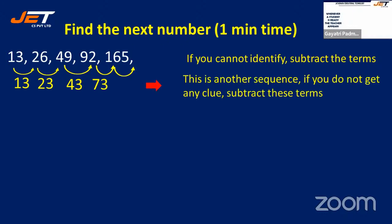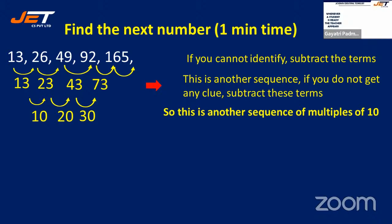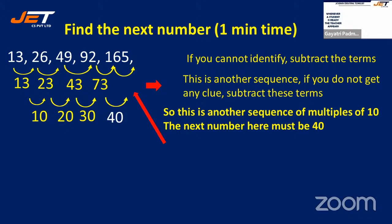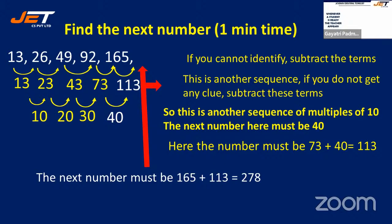If you do not get any clue, subtract these terms again: 23−13=10, 43−23=20, 73−43=30. The second differences increase by 10: 10, 20, 30. So the next must be 40. That means 73+40=113, and 165+113=278 is the next number.